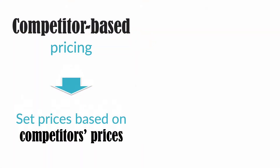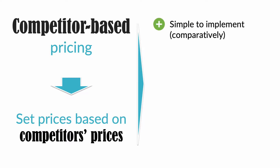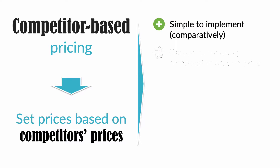Competition-based pricing has the great advantage of being simple to implement, at least when compared to the other methods, which can both get extremely complex. However, it does have some important drawbacks. The first one is quite obvious: if you and your competitors all behave the same way, you risk losing sight of your other product's attributes and end up racing your competition around price. And remember, price is just one among many other product features. This method is particularly dangerous when one of the competitors tries to systematically undercut the others, which can lead the entire industry into a price war and ruin the business for everyone.